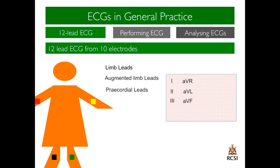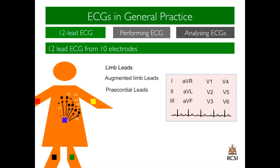Moving on to the six precordial or chest leads. Again they use a negative terminal, which is a confluence of limb electrodes. Between this negative terminal, there are six leads placed on the skin on the chest: V1, V2, V3, V4, V5 and V6. Beneath the 12-lead ECG is a rhythm strip, which typically is represented by lead 2.